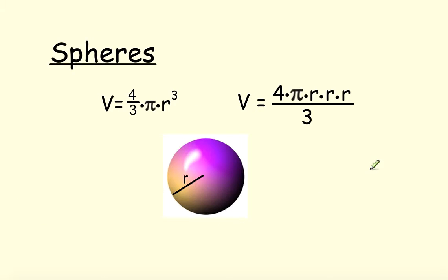Spheres are in their own different league in that they just have a formula that's specific to a sphere. It can be written as four-thirds times pi times r cubed. Another way to write it is four times pi times r times r times r, which is the same thing as saying r cubed, and then dividing it all by three. This is the easier route to go if you are doing it by hand. The radius is again halfway across.